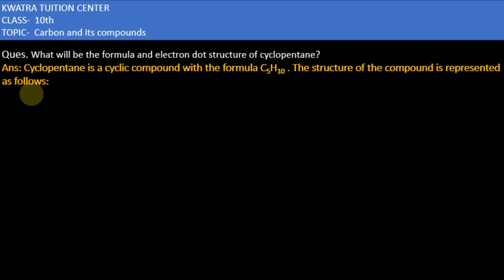The formula of cyclopentane is C5H10, and it is a 5-carbon closed ring.